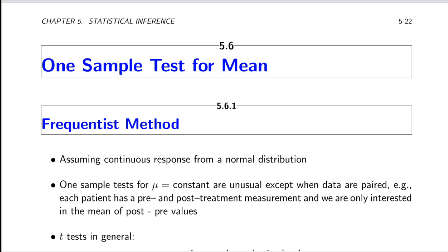We start with one-sample tests and uncertainty intervals for the mean of a continuous random variable, beginning with a traditional frequentist approach. For classical parametric inference, we assume a continuous response where the data come from a normal distribution. The test involved with a one-sample test for a mean tests the unknown population mean mu against some constant, so we might have a null hypothesis that mu is equal to that constant.